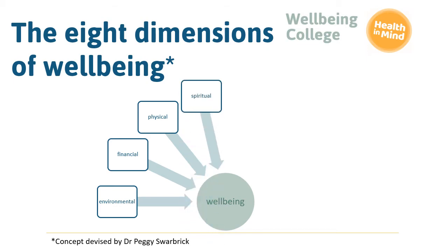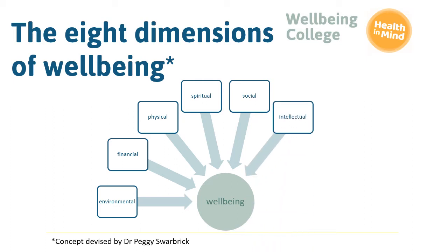Our spiritual needs refer to our sense of purpose and meaning in life. It's important for our wellbeing to also feel a sense of connection with others and to have a good support system. We also need to be able to express our creative abilities, find ways to expand our knowledge and skills, or generally experience the right level of intellectual stimulation. Our emotional health and how we cope with life, as well as our ability to form satisfying relationships at work, home or as part of our social life, all impact our mental health. Relationships in which there is violence, bullying or other abuse are likely to negatively impact our mental health. So too can feeling socially isolated or lonely.